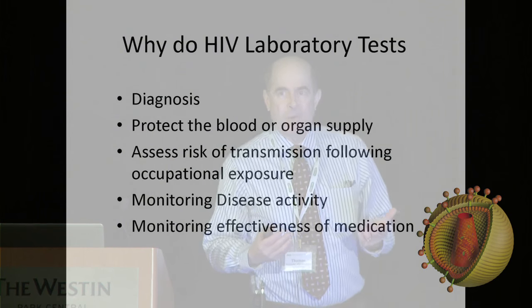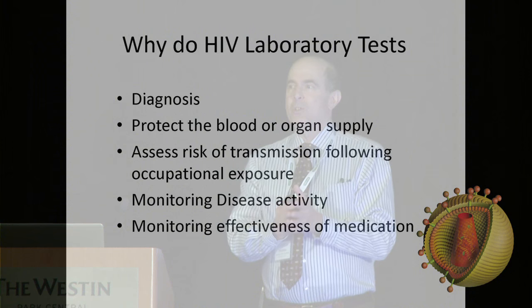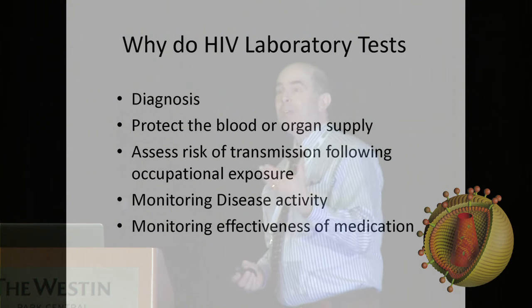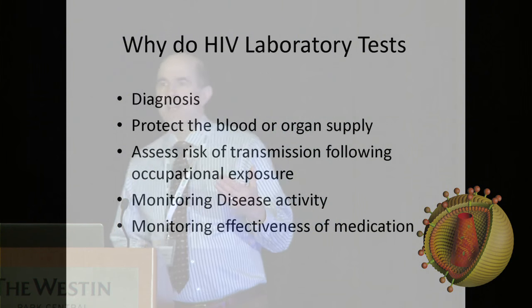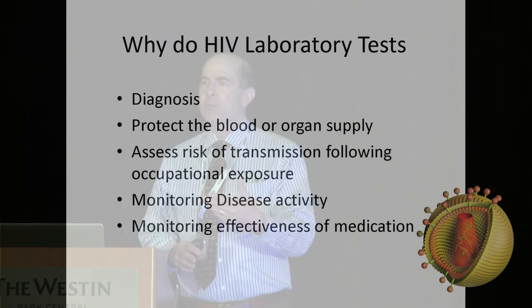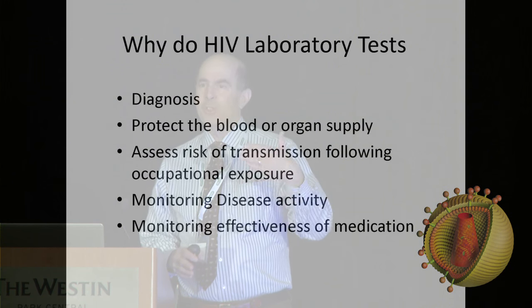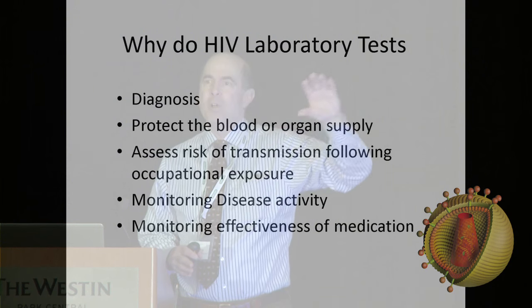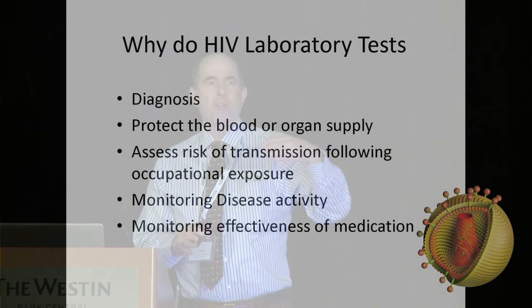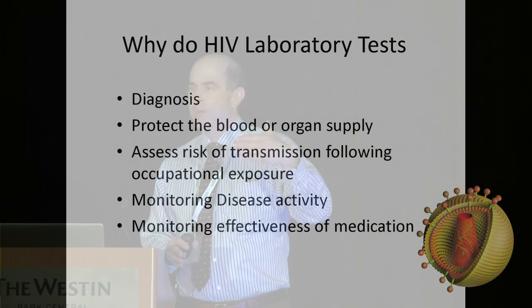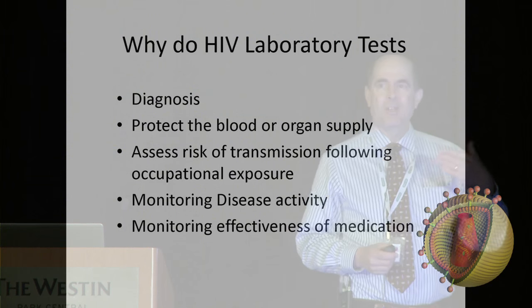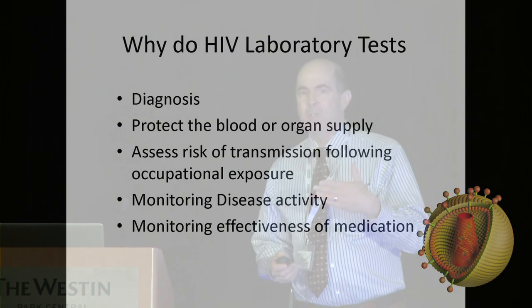Why do we do HIV laboratory tests? For diagnosis — to find out if someone is infected — and to protect the blood or organ supply. HIV antibody testing really started in the mid-1980s to protect the blood supply, not to diagnose infection. The early tests were very sensitive for that purpose, but when applied to diagnosis, they caused problems by telling people they were HIV-positive when they really weren't, so the sensitivity issues of early generation tests had to be rectified.